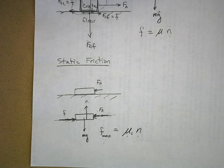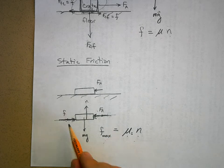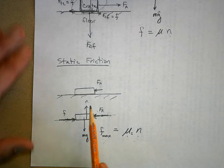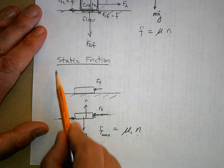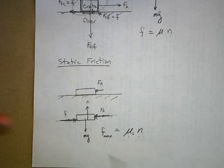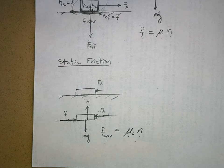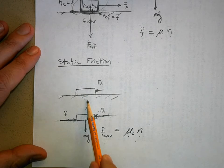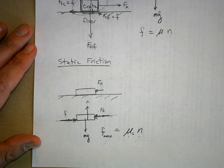Student question: So is the friction and the force equal in magnitude? Opposite in direction, because we're saying that the eraser is static. What do we mean by static? There's no acceleration, no relative motion between the eraser and the floor.